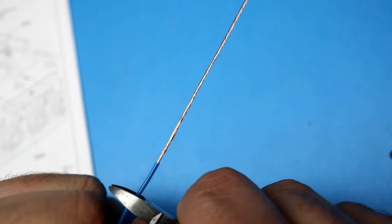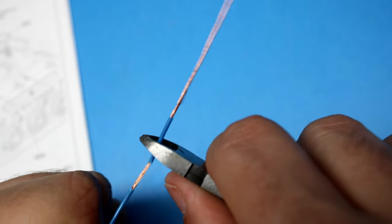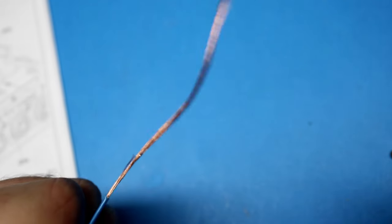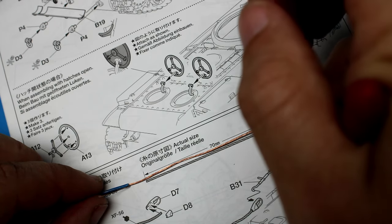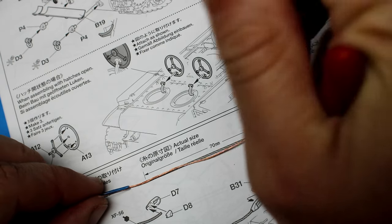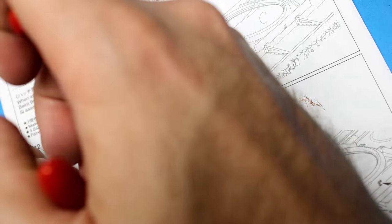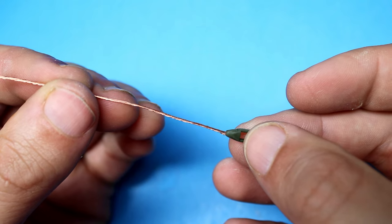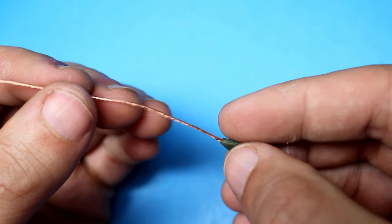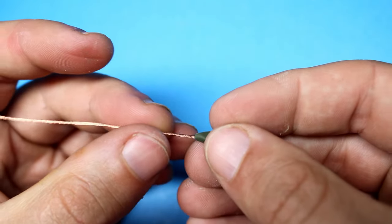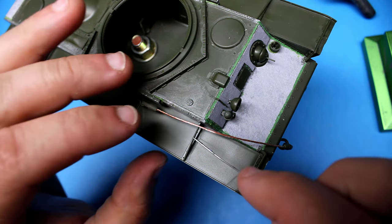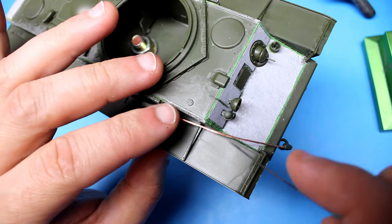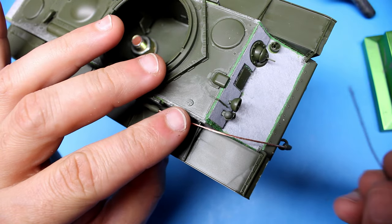Tamiya does give you some strings to use for your tow cables, but I found it easier just to use some copper wire. This stays nice and stiff and you're able to bend it like a steel cable would in real life. One nice thing about Tamiya is they give you the measurement right in the instructions so you're able to cut your cable to the proper length. I then used super glue to set that cable in place. You have to remember that these cables have some weight to them in real life, so you don't want them floating in the air or looking out of place.